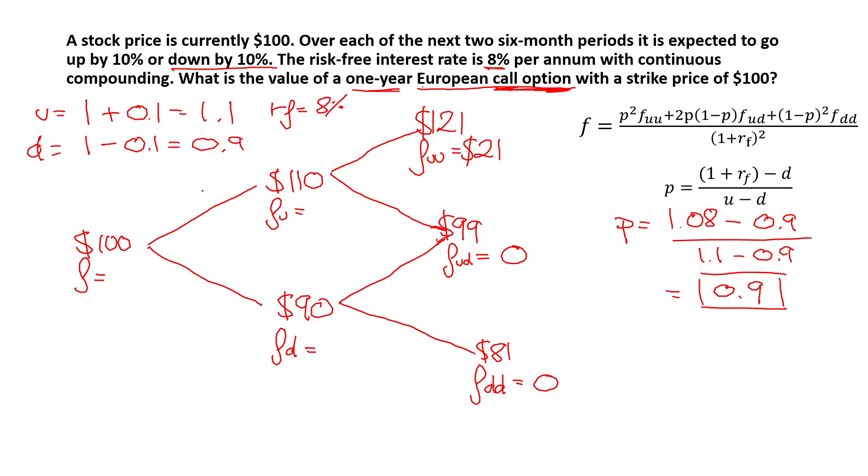So as I said before, I would explain in more detail what the probability is. The probability is the probability of the share price going up. We know by how much it's going to go up, and that's U, the magnitude, but we need to know with what probability is it going to go up, and then 1 minus P would be the probability of the share price going down. So P is 0.9 and 1 minus P is 0.1.